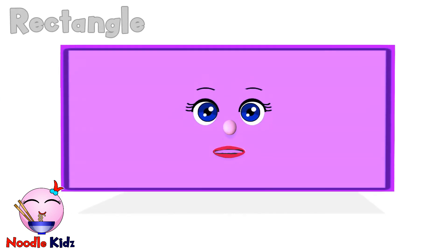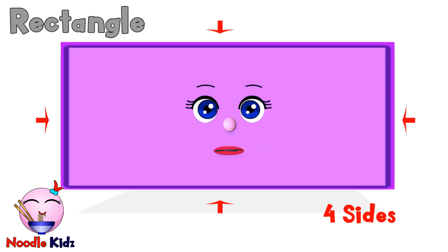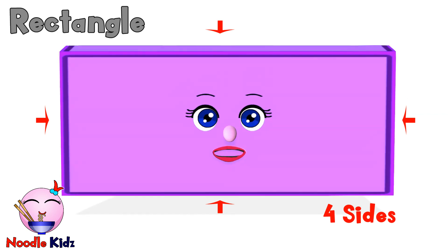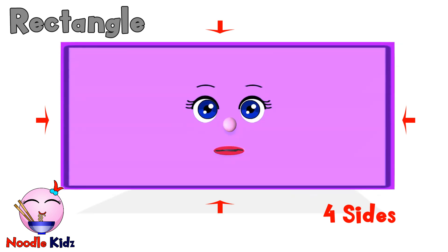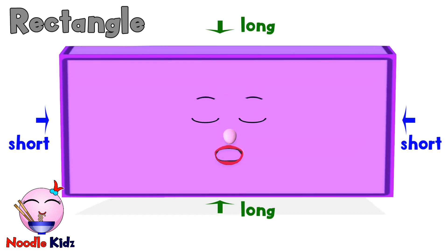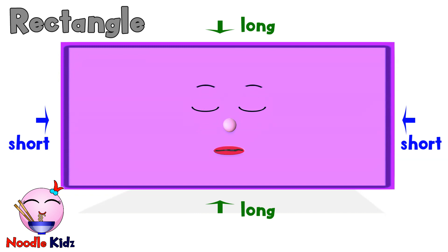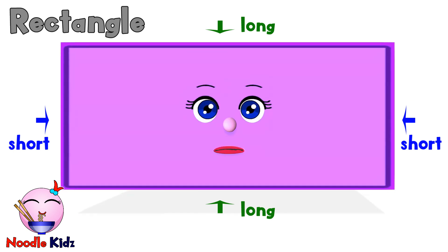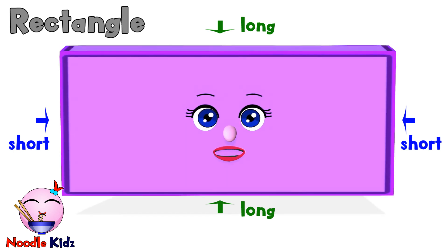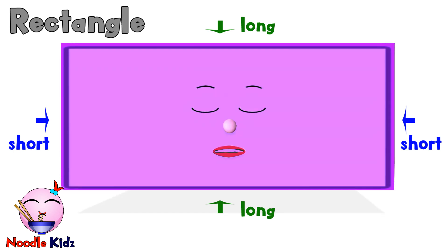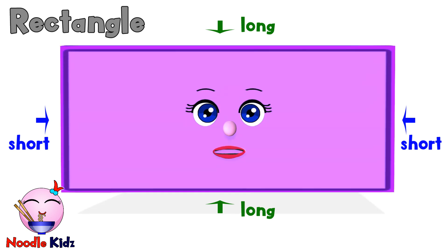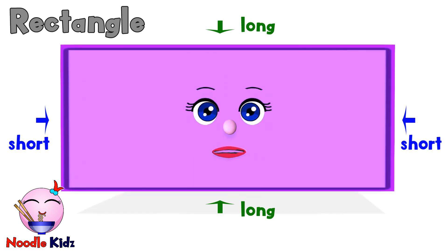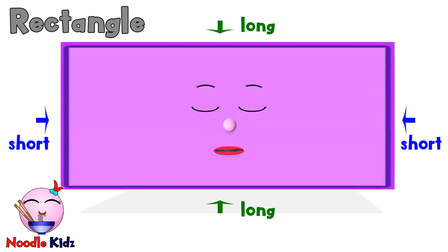My name is Rectangle. Just like Square, I have 4 sides as well. But only 2 sides have the same length — 2 sides are always longer than the other 2. These opposite sides are short and these opposite sides are long.